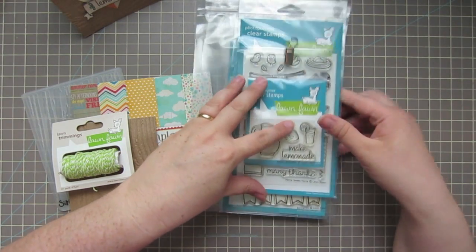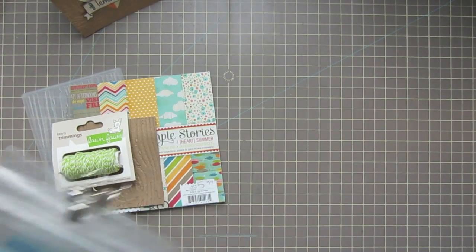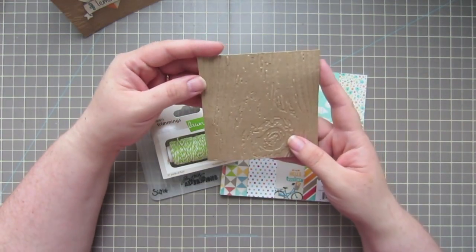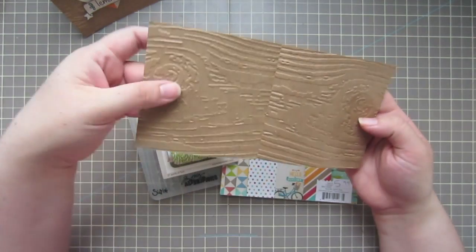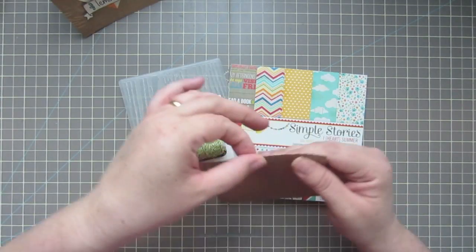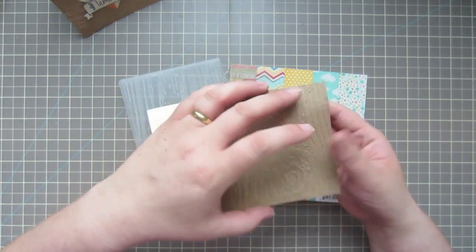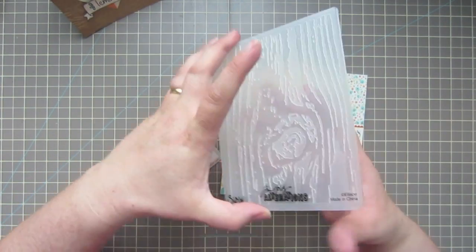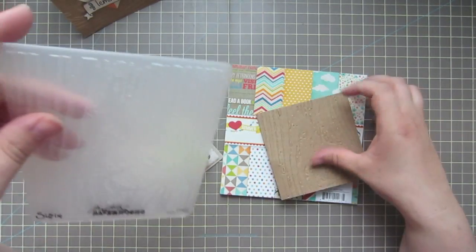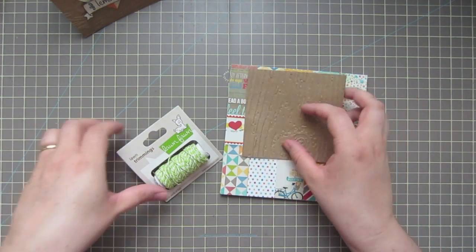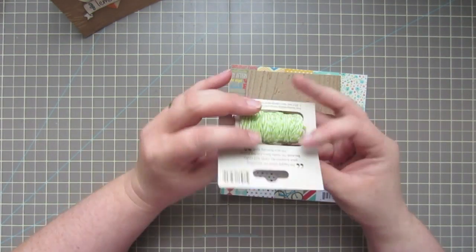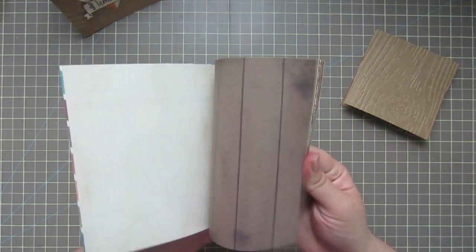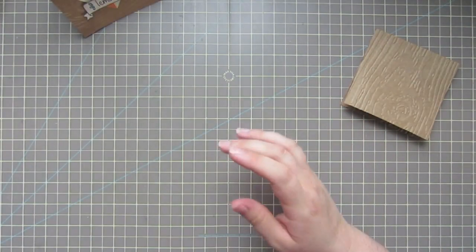Let's see what else. I have a piece of craft cardstock that is cut down to an 8 by 4 inch piece of paper, and then fold it in half to make a 4x4 square card. I have run that through my Tim Holtz Alterations wood grain embossing folder just to give it that wood grain effect for the lemonade stand. I also use some lawn trimmings in the lime color and some papers from the Simple Stories I Heart Summer paper pad.